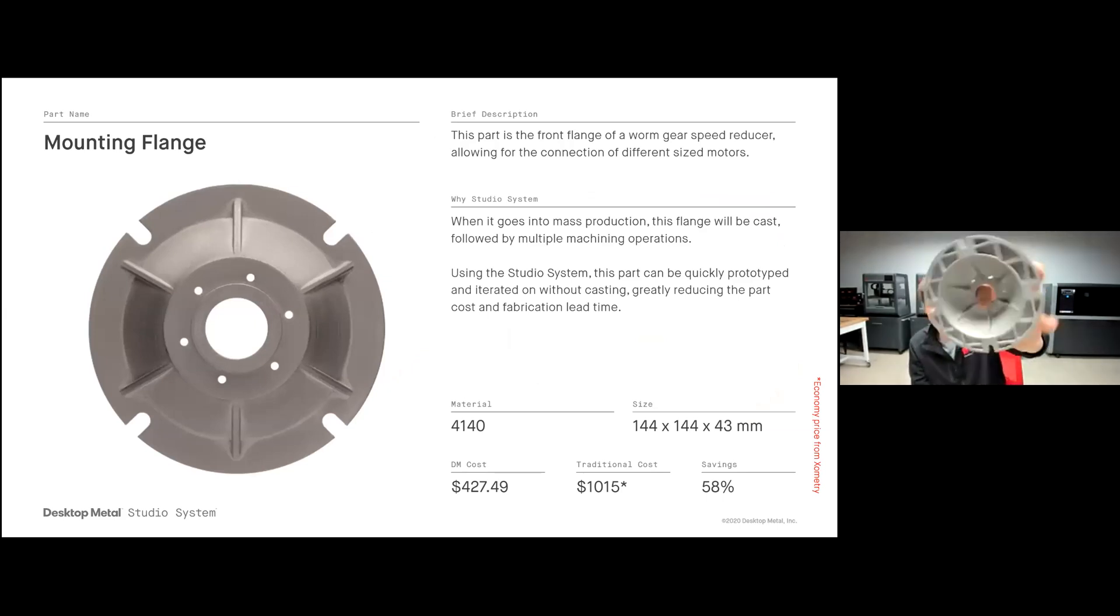A good example of this is this worm gear speed reducer mounting flange. This is a part that eventually will be cast in high volumes, but during the prototyping stage, it is beneficial to print this geometry on the Studio System to understand how this is going to perform. You may want to print a few different flanges of different sizes so we can test different motors to really understand what's our best geometry to go to mass production with. This part was printed in 4140, a low alloy steel giving it excellent hardness for different mounting scenarios. Printed on the Studio System for just $427 in comparison to if you were to produce this part with CNC machining as an alternative, it's going to cost over a thousand dollars where here I can just take my file, throw it on the printer, in a couple days I have my mounting flange ready to go. A great example of a prototype here before I moved to mass production with casting.